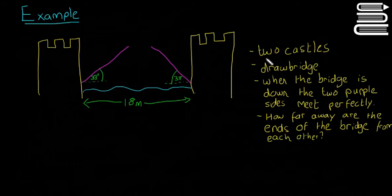We have two castles here, the two yellow castles, and there's a drawbridge in between them. That purple thing here is the bridge. When the bridge is down, the two purple sides meet perfectly. When people want to cross from one castle to the other, they lower the two bridges and they meet perfectly in the middle.